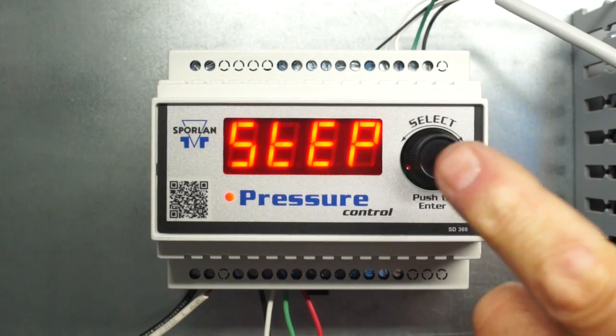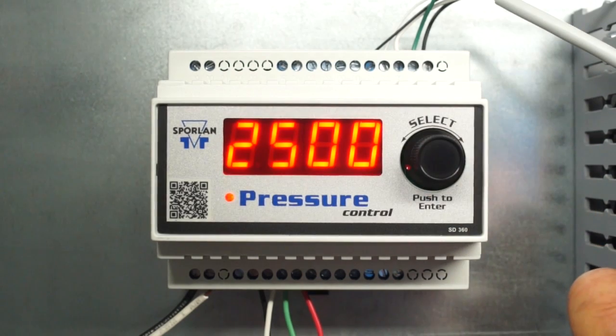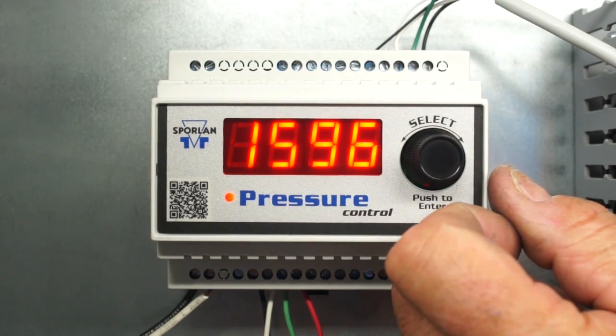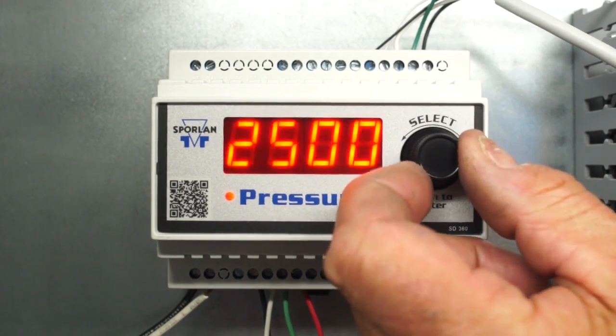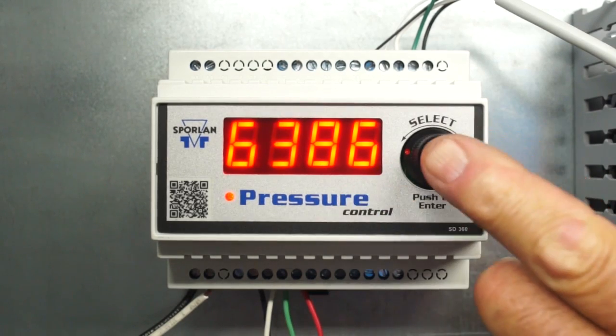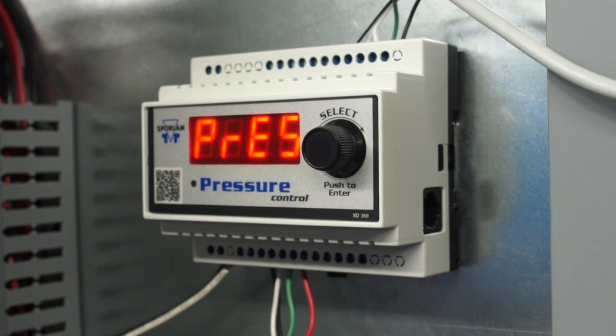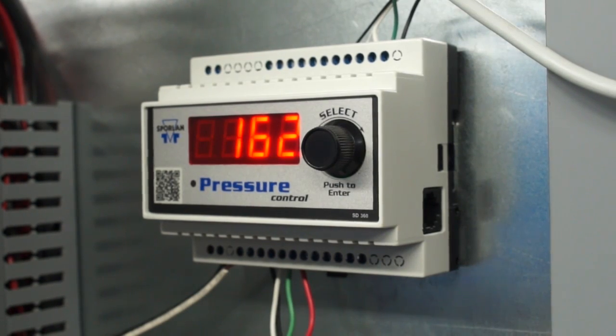Finally, set the valve steps STEP by selecting the correct number of steps for the electric valve being used. Press the select knob to save the value. That completes the setup. The pressure control will begin controlling based on the default values you just programmed and is now displaying system pressure PRES.